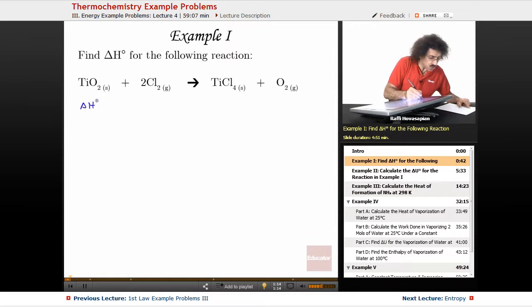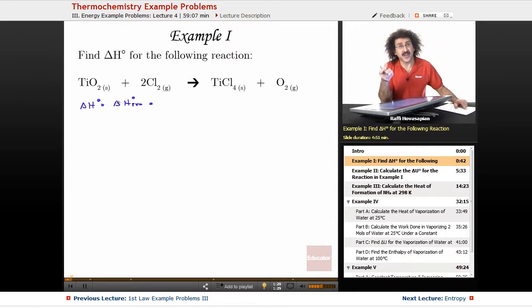So we know that the delta H, the delta H of the reaction, and we remember that this little degree sign up above there represents standard conditions. So standard conditions happen to be 25 degrees Celsius or 298 Kelvin and one atmosphere pressure. We need a particular standard, so we choose that standard.